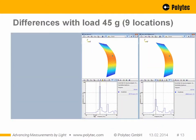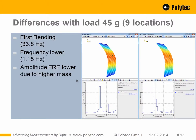Now we compare measurements with and without mass. On the left is the measurement without mass, and on the right is the measurement with 45 grams at all nine locations. For the first bending mode at 33.8 Hz, there is a slightly lower frequency with mass, and the amplitude is about 60% of the value without mass. The deflection shape looks similar — making mass loading tricky to identify visually from the shape alone.